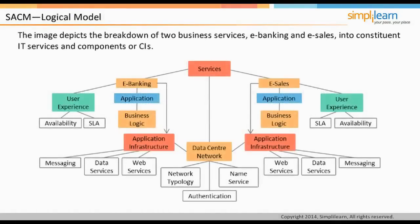The configuration management logical model of services and infrastructure is a single, common representation used by all parts of IT service management and beyond — such as HR, finance, supplier, and customers. A diagram depicts the breakdown of two business services, e-banking and e-sales, into constituent IT services and components or CIs. The services provide a user experience dependent on availability and SLA, and depend on IT applications governed by business rules and underlying infrastructure such as data services or web services. This infrastructure is housed in a data center and connected by network. This logical model enables customers and service providers to get an overview of end-to-end services, enabled by the configuration management system.